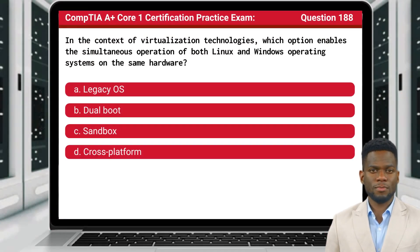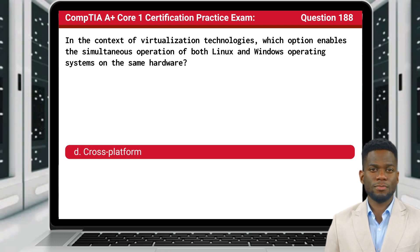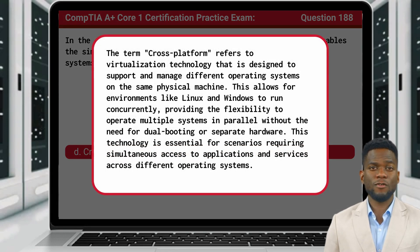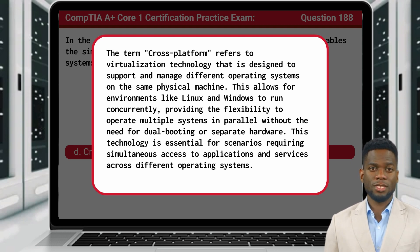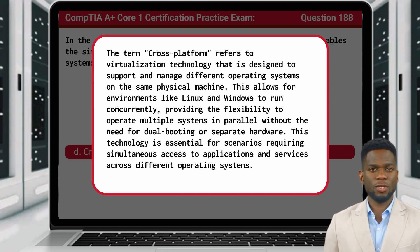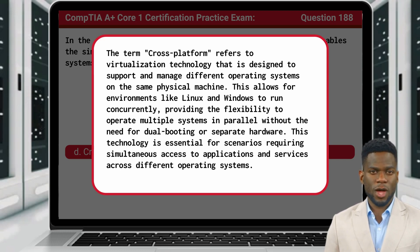Question 188. In the context of virtualization technologies, which option enables the simultaneous operation of both Linux and Windows operating systems on the same hardware? The answer is D: cross-platform. The term cross-platform refers to virtualization technology designed to support and manage different operating systems on the same physical machine. This allows environments like Linux and Windows to run concurrently, providing the flexibility to operate multiple systems in parallel without the need for dual booting or separate hardware. This technology is essential for scenarios requiring simultaneous access to applications and services across different operating systems.